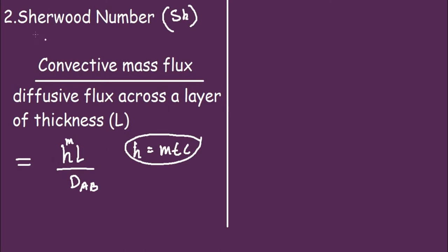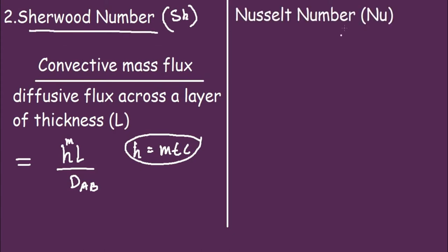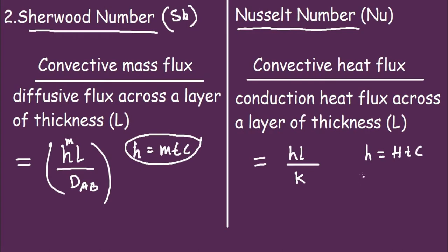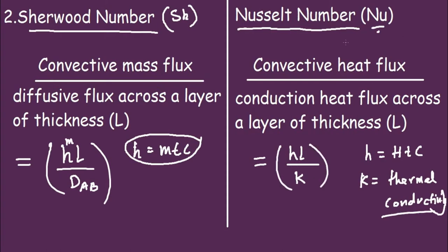The analogous number to Sherwood number in heat transfer is the Nusselt number, denoted by Nu. It is the ratio of convective heat flux to conduction heat flux across a layer of thickness L. Mathematically, Nu equals H times L divided by k, where H is the heat transfer coefficient and k is the thermal conductivity.